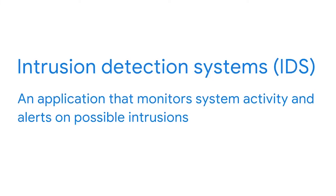Cryptojacking software is hard to detect. Luckily, security professionals have sophisticated tools that can help. An intrusion detection system, or IDS, is an application that monitors system activity and alerts on possible intrusions. When abnormal activity is detected — like malware mining for coins — the IDS alerts security personnel.